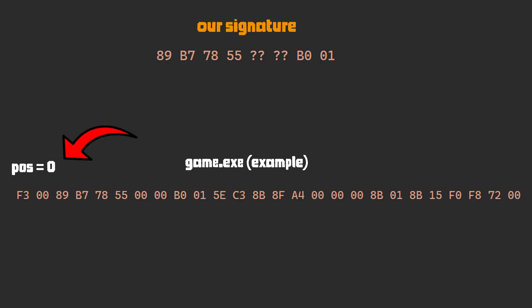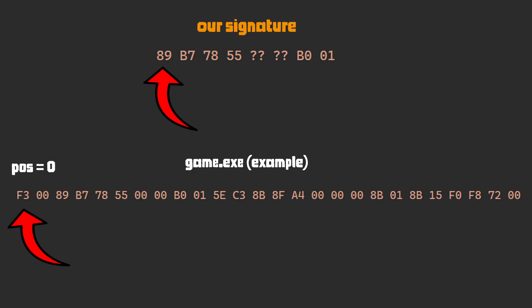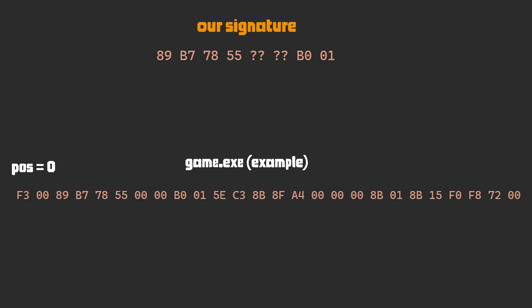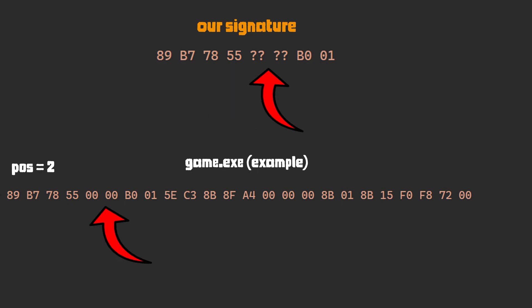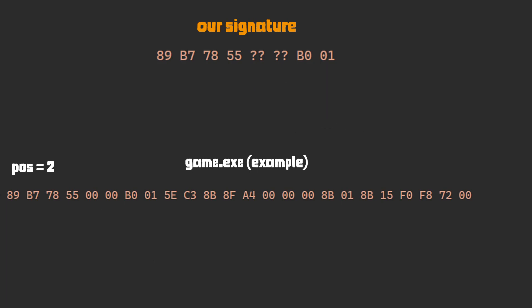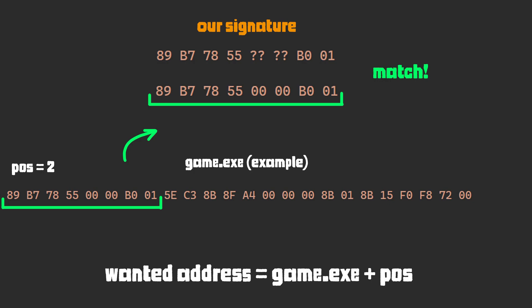Notice that we store the position we are at all times. We will check the first byte in our pattern and compare it to our region position byte. If it does not match, we increment our position by one and check again. If it does match, we check the next position and compare again. For bytes that shouldn't match, we simply ignore and move on to the next one. If the sequence in the region and our pattern match, we return the position, which will be the wanted address.